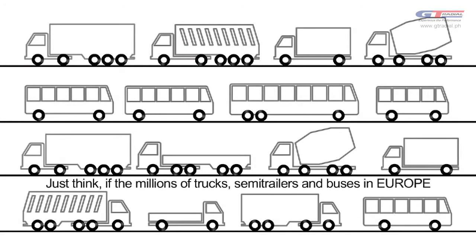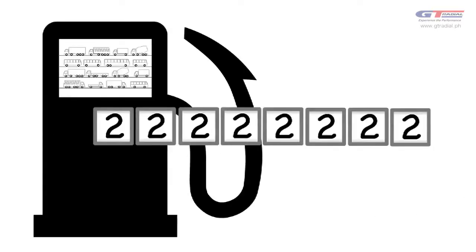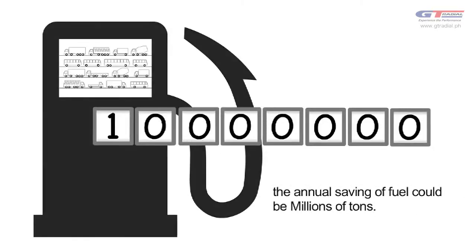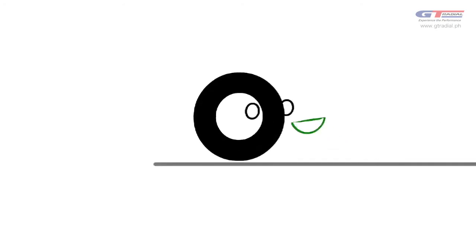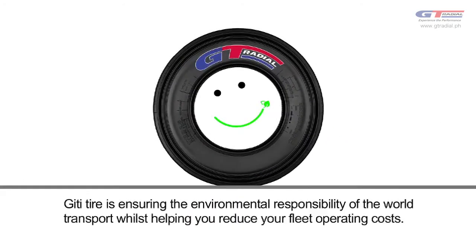Just think, if the millions of trucks and semi-trailers and buses in Europe were equipped with low rolling resistance tires and correctly maintained, the annual savings of fuel could be at least millions of tons. GT Tire is ensuring the environmental responsibility of the world of transport whilst helping you reduce your fleet operating costs.